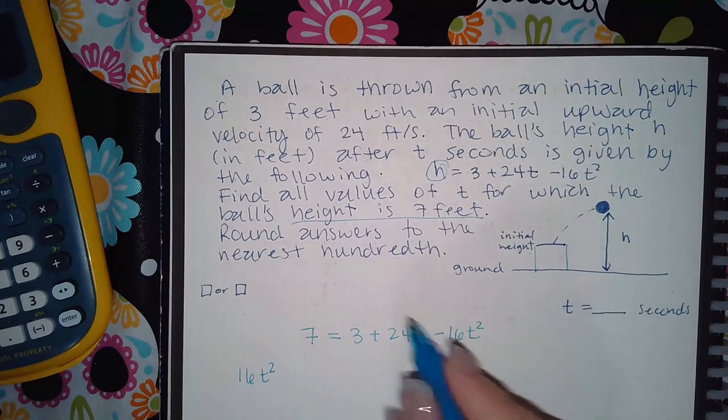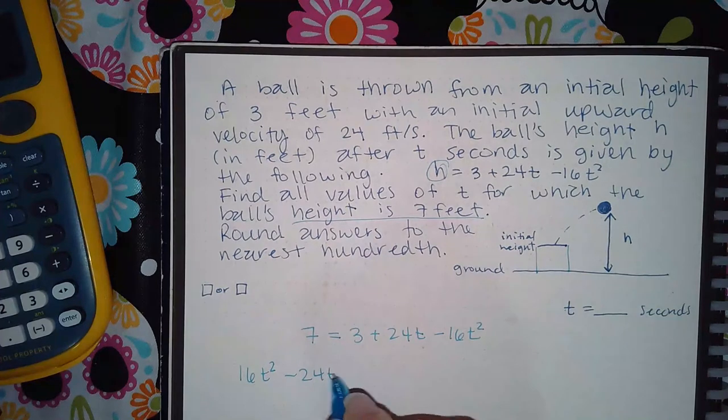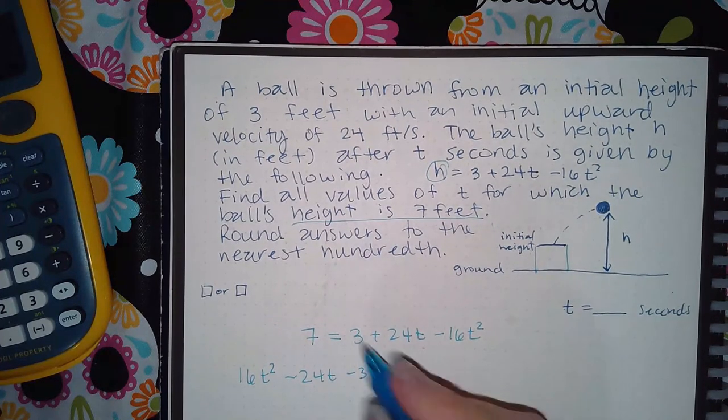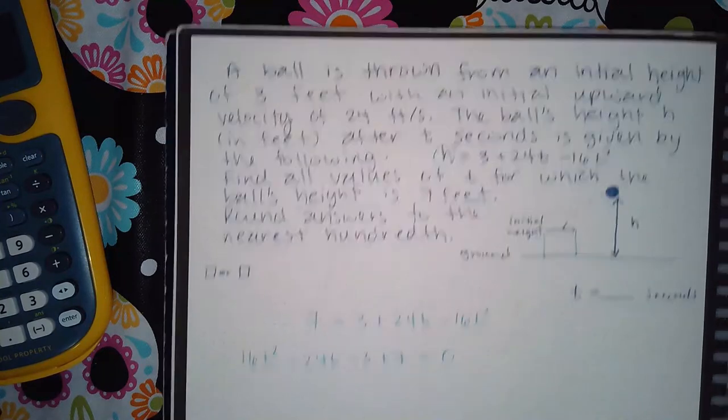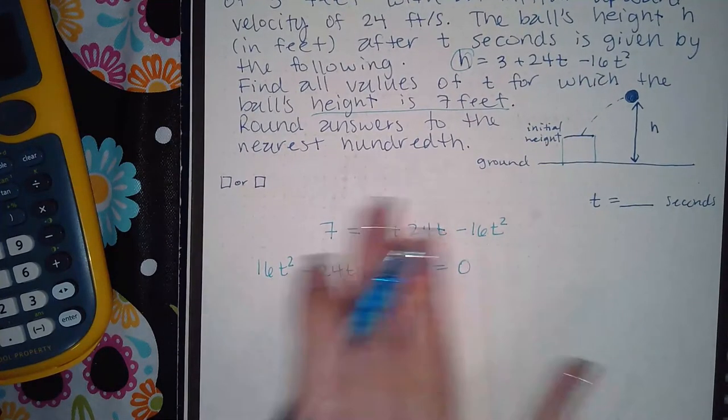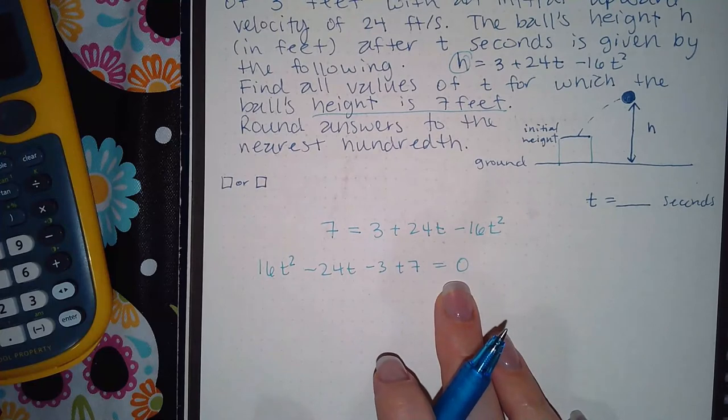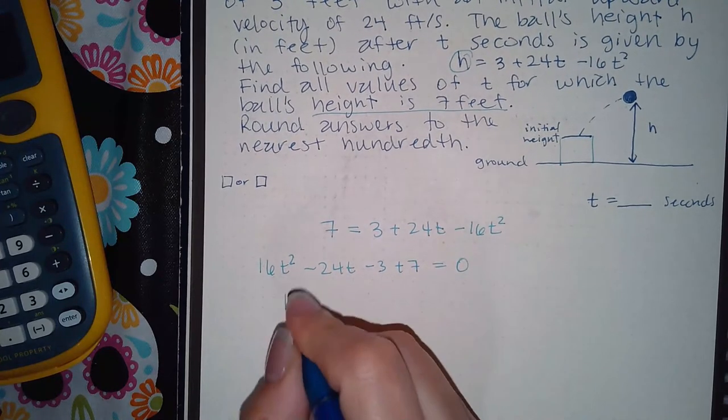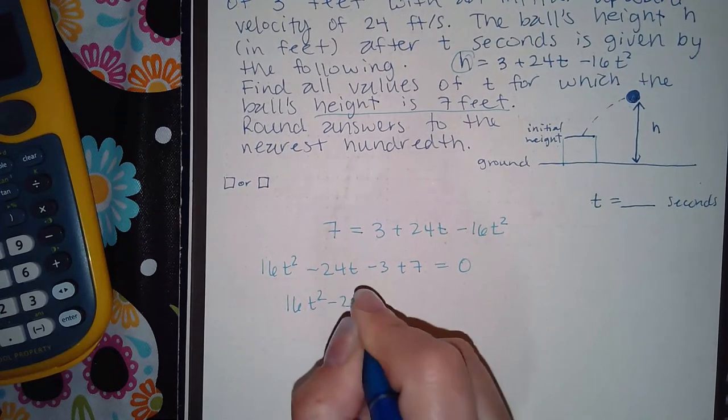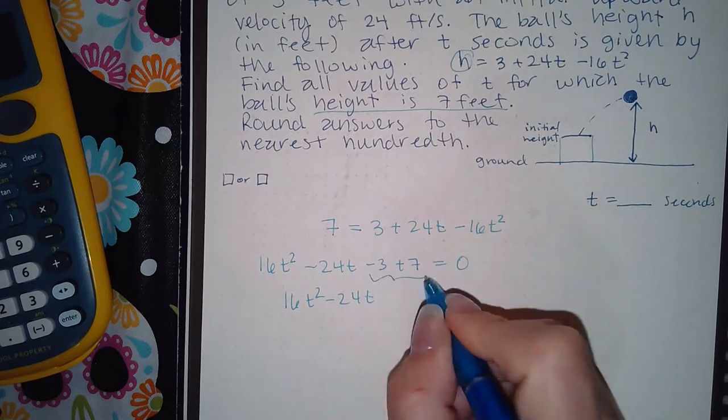I will subtract the 24t over, I will minus the 3 over, and I still have that positive 7 that was there to begin with. And everybody's moved over, I do get 0 on this side. Now here I'm going to have 16t squared minus 24t, and if I combine these like terms I get positive 4.